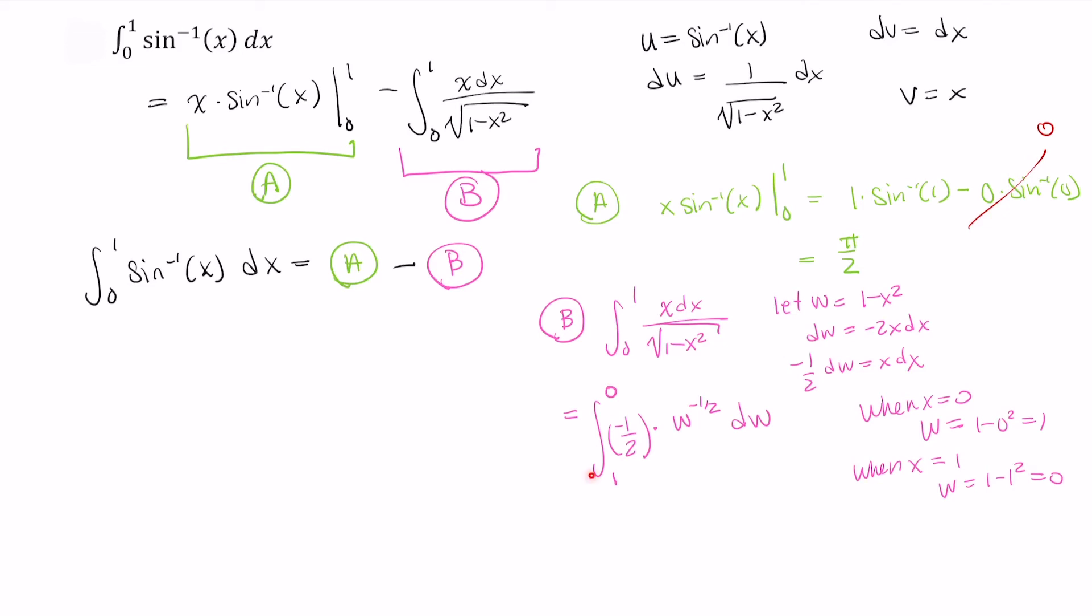When we're integrating, the smaller number has to be the lower bound, so we have to flip our limits of integration, which means we multiply this entire integral by a negative, ending up with 1 half times the integral from 0 to 1 of w to the negative 1 half dw. This integrates to 1 half times w to the 1 half power over 1 half.